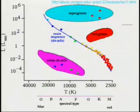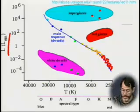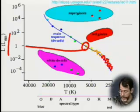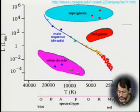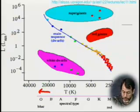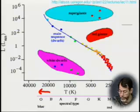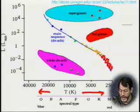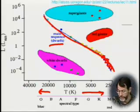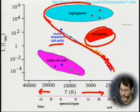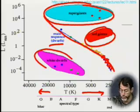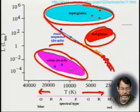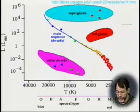Here's a cartoon of the HR diagram. Luminosity is in terms of the luminosity of the Sun. Temperature and spectral types are shown along the bottom. The hotter, bluer spectral types are on the left side, and the cooler, redder spectral types are on the right. Here we see the main sequence again. Red giants are here, supergiants are shown at the top, and white dwarf stars — which are actually very small and are the end states of stars like the Sun — are down there.